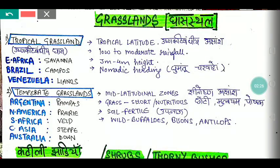Grassland is another major type of natural vegetation. There are two main kinds: tropical grassland and temperate grassland.